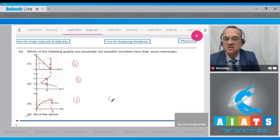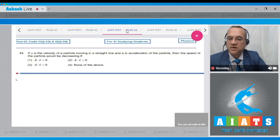Therefore, all these graphs are not possible. The correct answer is option number 4.